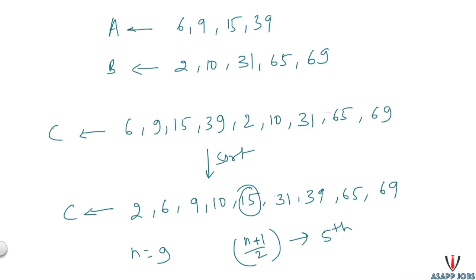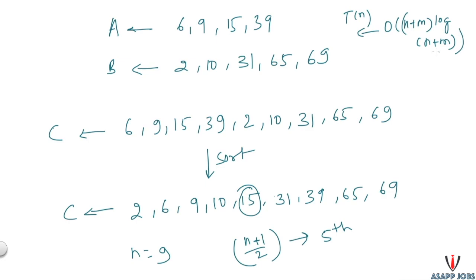The problem with this approach is that we are creating a new array C which consumes extra space. The second problem is the sort operation — any good sorting algorithm takes O(n log n) time. So the time complexity of this approach is O((n+m) log(n+m)), and the space complexity is O(n+m).